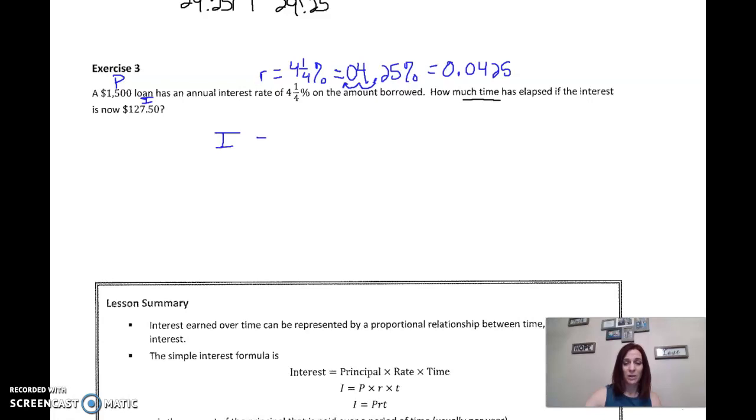So again, write down your formula. Interest equals principal times rate times time. Plug in what you know. My principal is $1,500. My rate is 0.0425. And my interest is $127.50. We don't know our time.